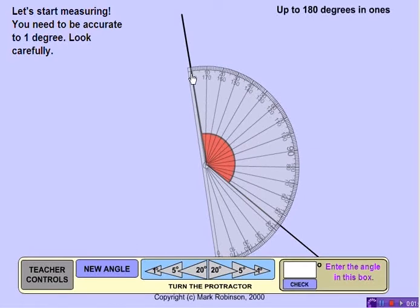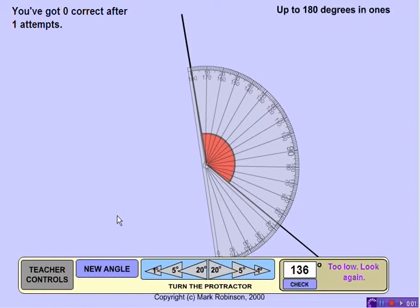Now I've done that. It is the outside zero that is lined up, so I'm going to use that to measure my angle, that outside scale. So I'm going here using the outside looks to be about 136, 137, somewhere right in there. I'm just going to say 136 and see what happens. It tells me I got zero correct after one attempt. It's too low. Look again.